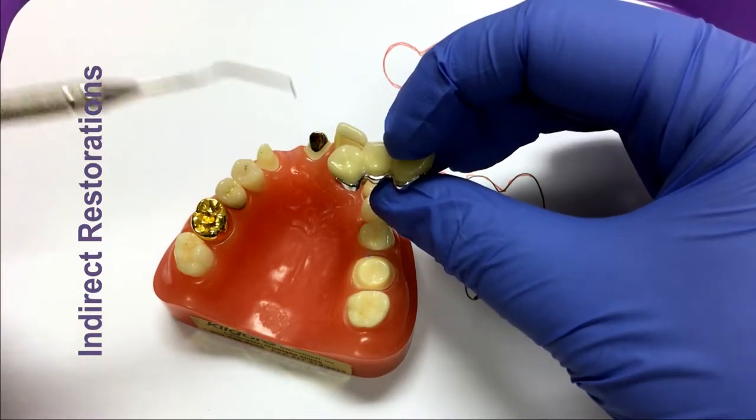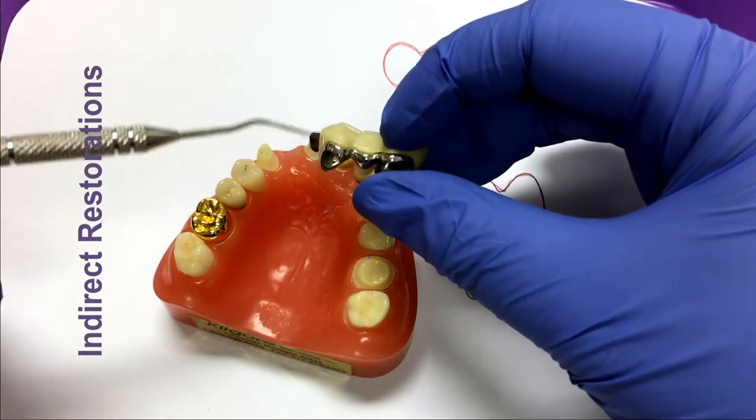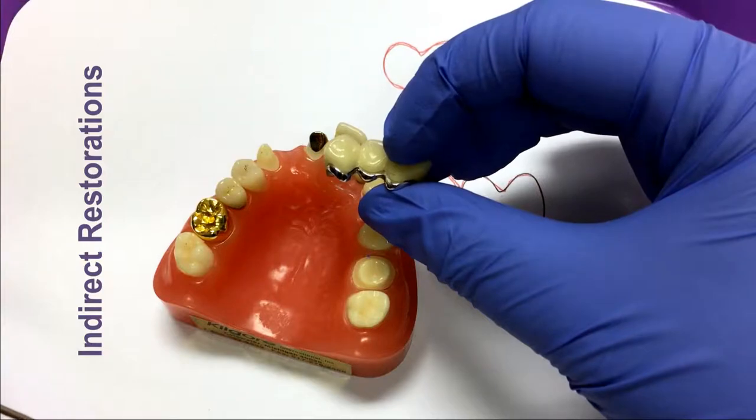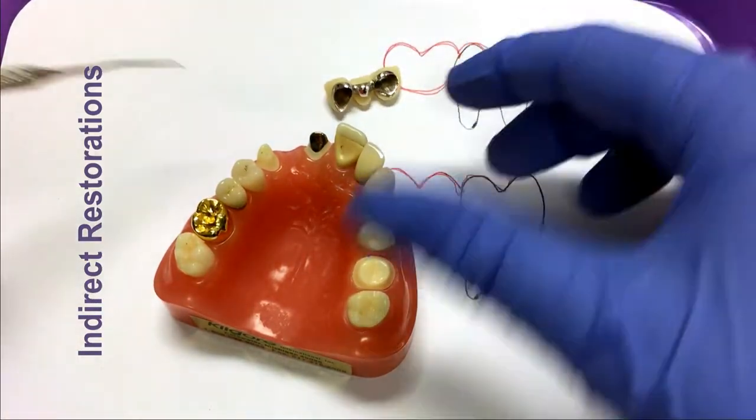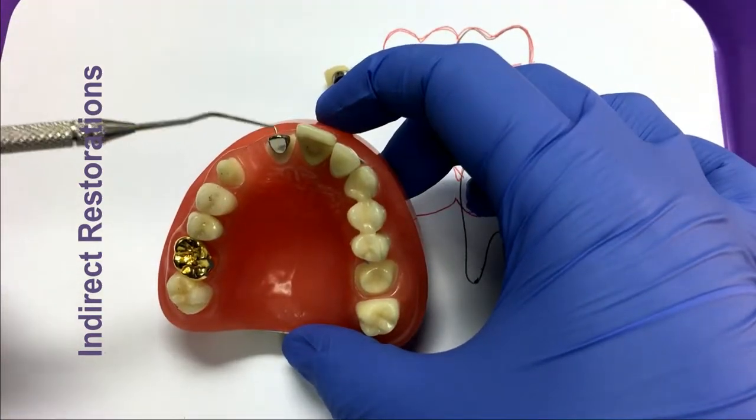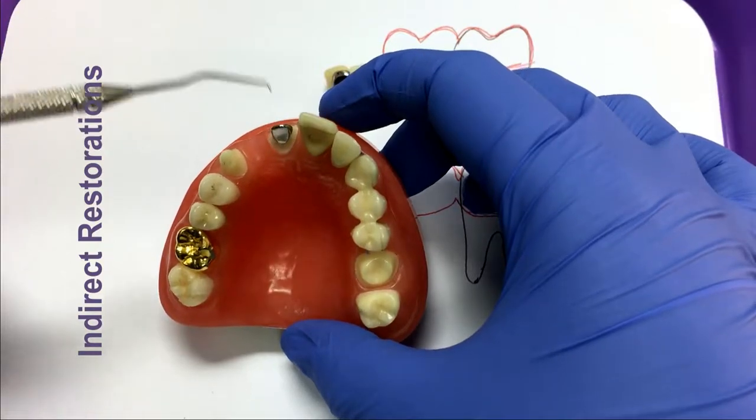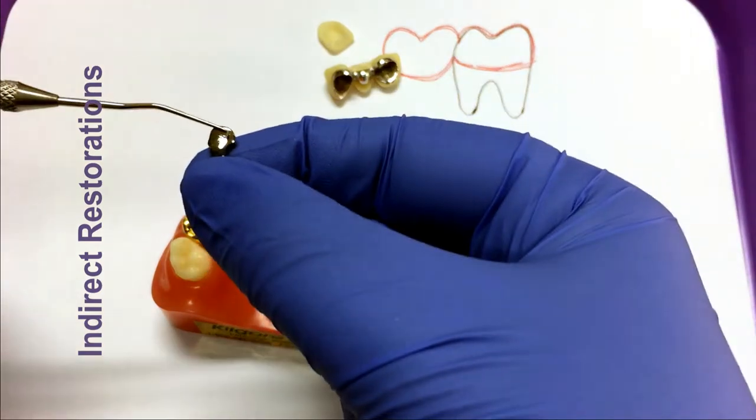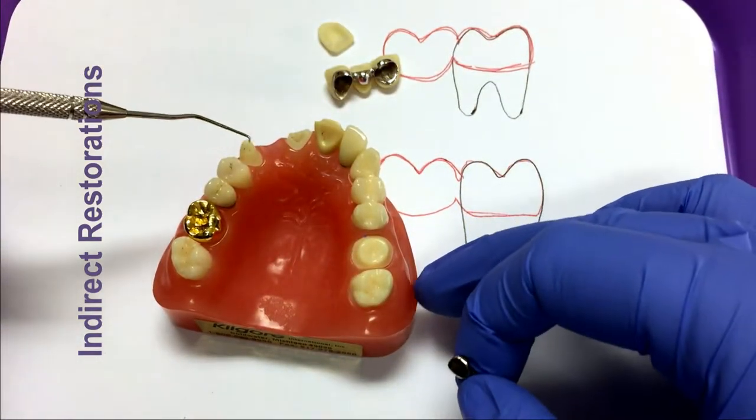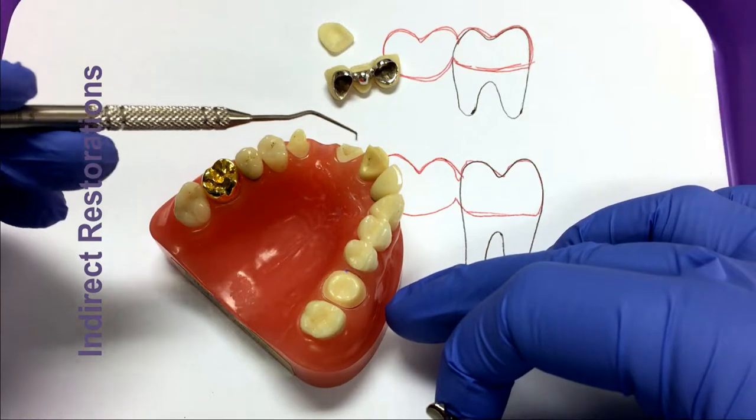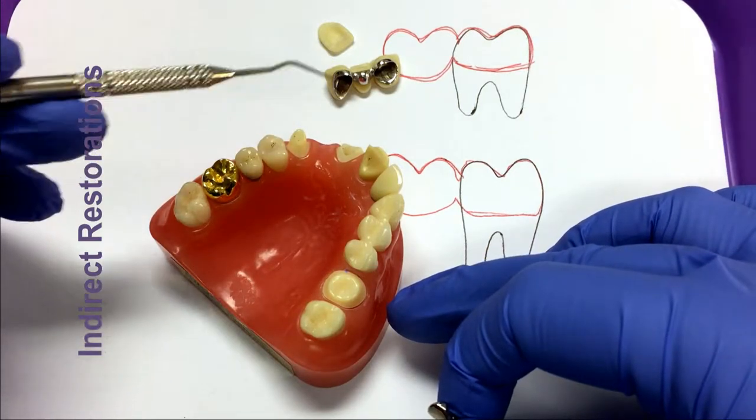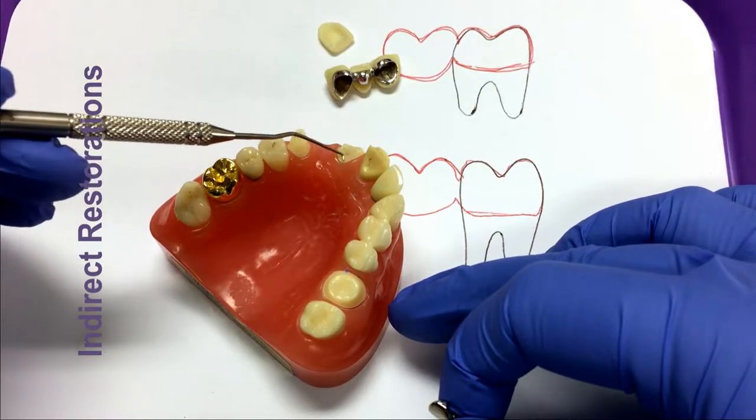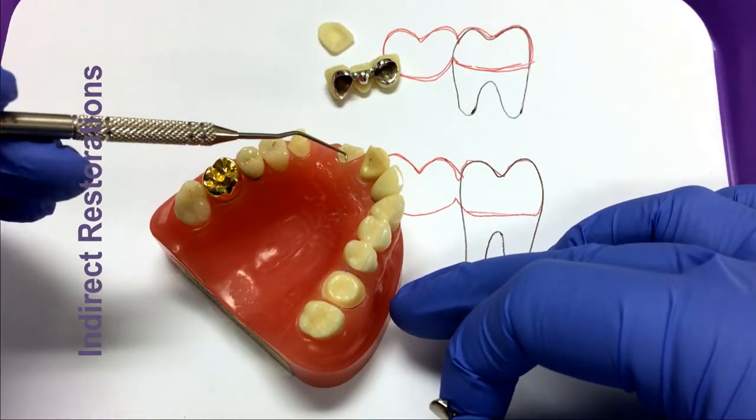On this bridge example, this abutment on the central incisor has a cast post and core. If you notice, compared to the other abutment, how greatly reduced the tooth structure is, a bridge would not be able to be secured to that abutment very easily. So the operator can place a post and core and that will act as surface area for the cement to adhere to.